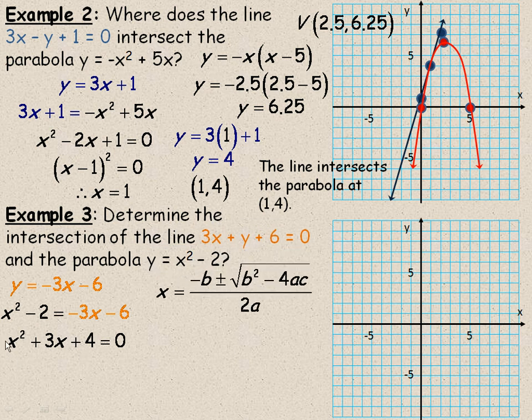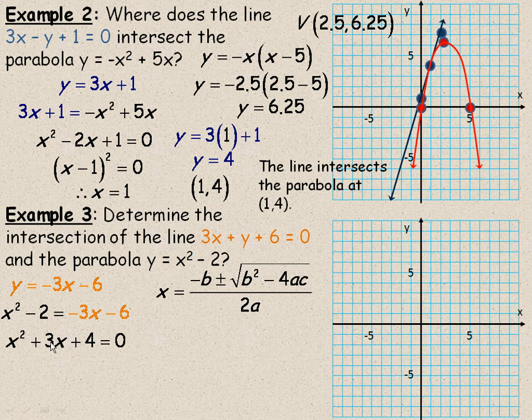So here comes the quadratic formula. And, of course, a is 1, b is 3, and c is 4. And so we substitute those constants in place of a, b, and c, those values, and we get this.